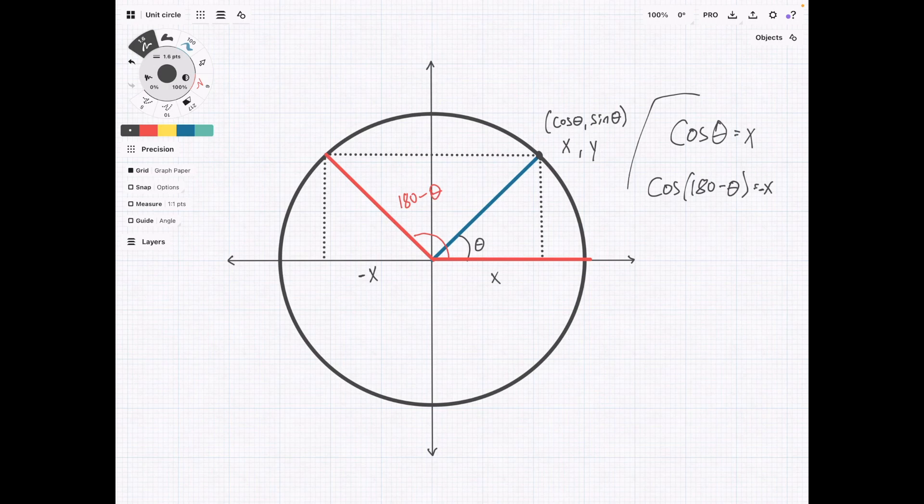And this is the gist of what I want to show you here. When you have supplementary angles, the first one is going to have a positive x value for cosine, and the supplementary angle is going to have a negative value for cosine.